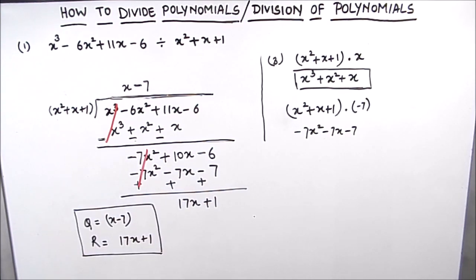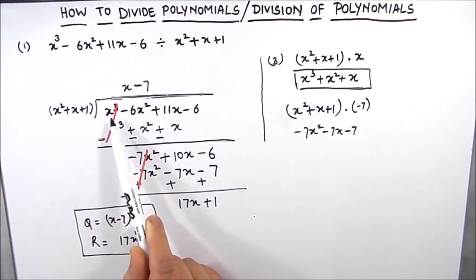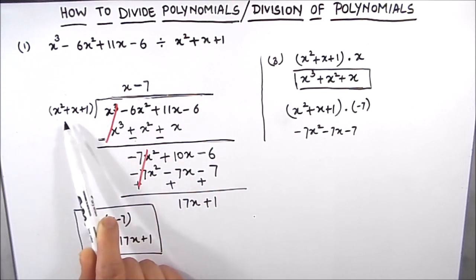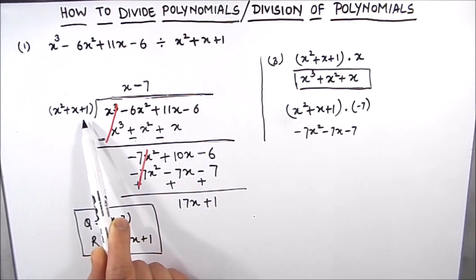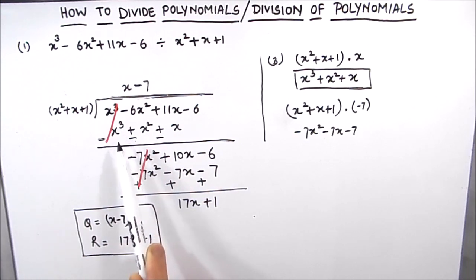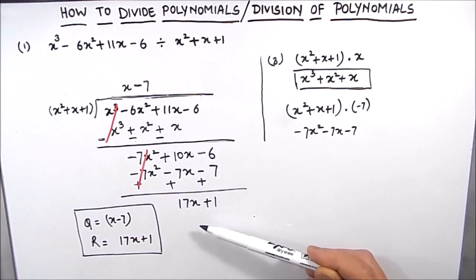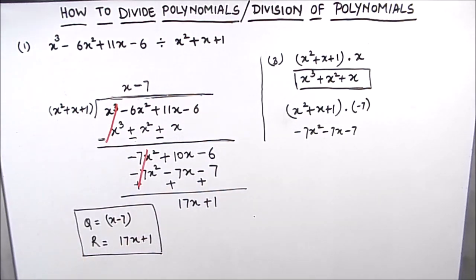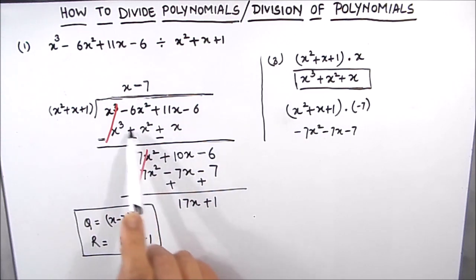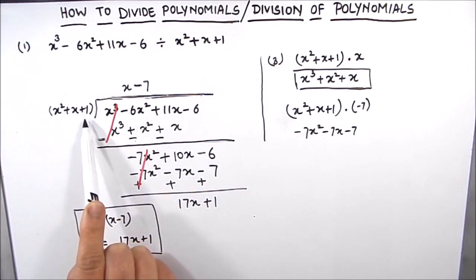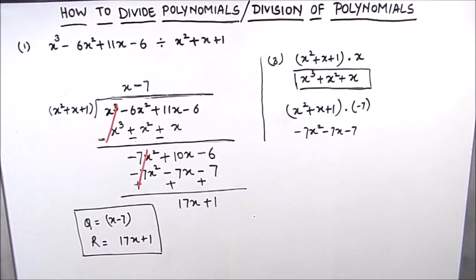Let's revise the steps. First, arrange the polynomials in decreasing order of their degrees. Second, divide only the first term of the dividend, multiply the divisor by the required term or number, and subtract the result from the dividend. Repeat the process until we get a zero remainder or a remainder whose degree is less than the degree of the divisor. Take care of the signs of the polynomials throughout.